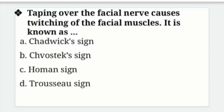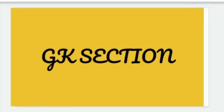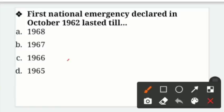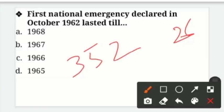Now we move to the GK section. First question: The first National Emergency — pehli National Emergency October 1962 mein declare ki gayi thi — lasted till which year? Options: 1968, 1967, 1966, 1965. The first proclamation of Emergency under Article 352 was made on 26th October 1962 due to Chinese aggression in NEFA. It was revoked on January 10, 1968 — option A is the right answer.